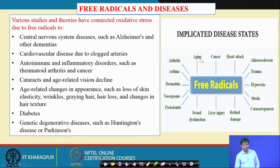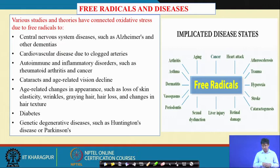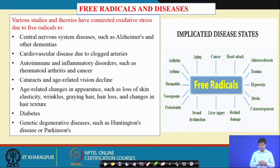These diseases — aging, cancer, heart attack, atherosclerosis, trauma, stroke, retinal damage, liver injury, sexual dysfunction, periodontitis, vasospasm, dermatitis, asthma, arthritis — are due to formation of free radicals in the human body. Our body has a defense mechanism and antioxidant enzymes are secreted, but they may not be quite enough to fight free radicals. External sources — natural sources of antioxidants — should be supplemented daily to fight against free radicals.